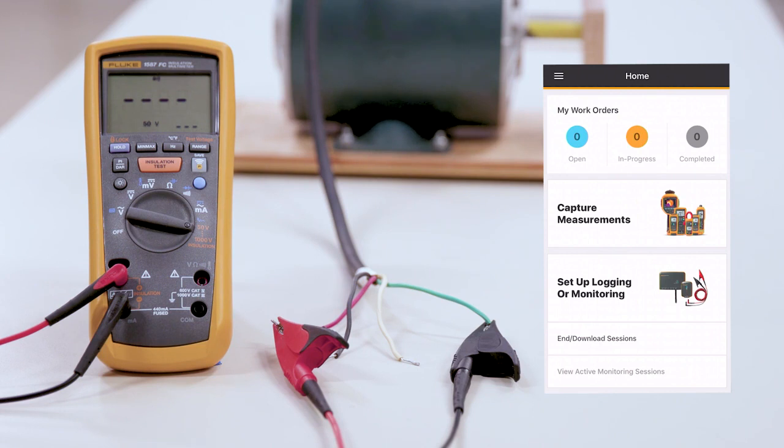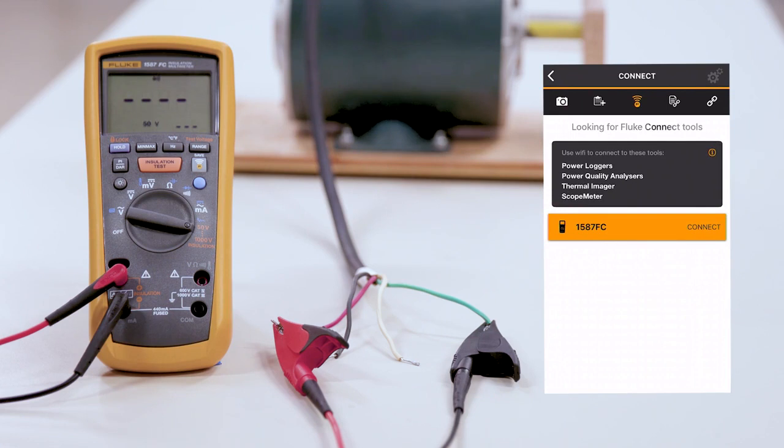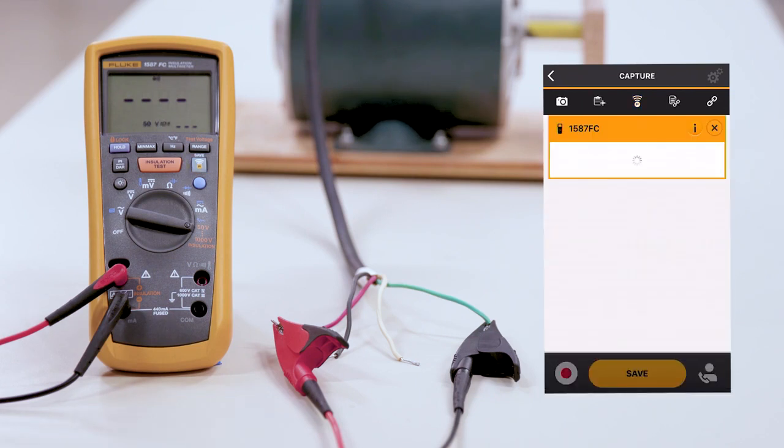We're going to go over to our phone and hit the capture measurements. As you can see, the 1587 FC is now connected to it. We'll connect to that meter.